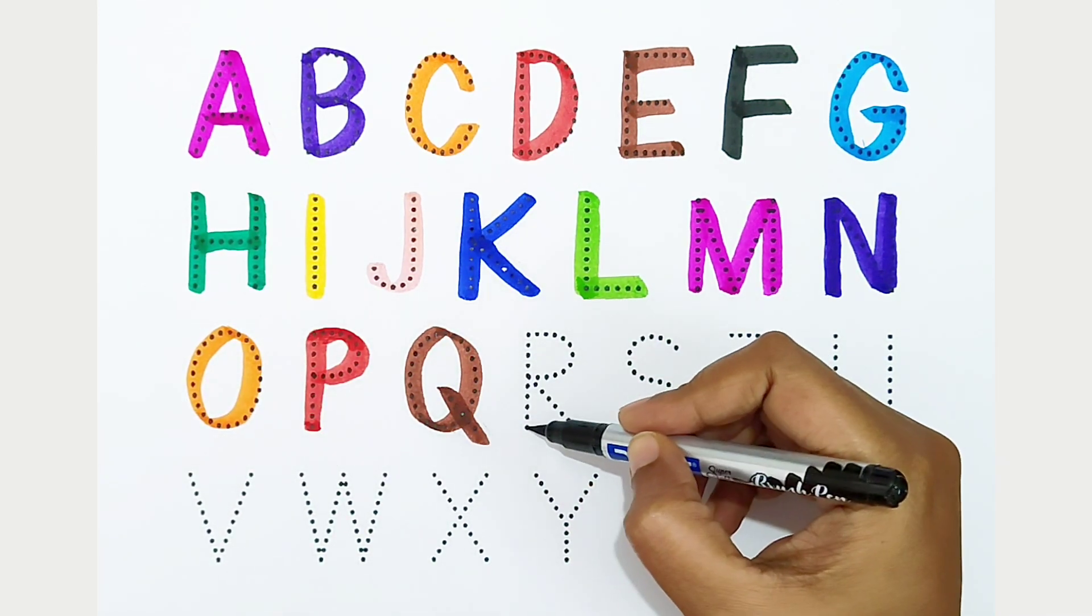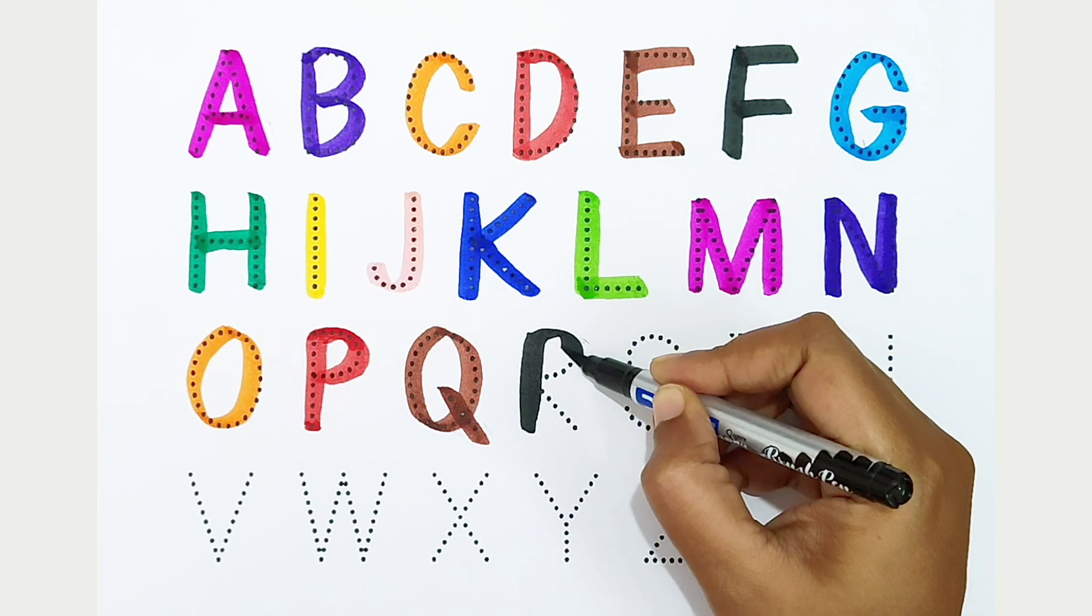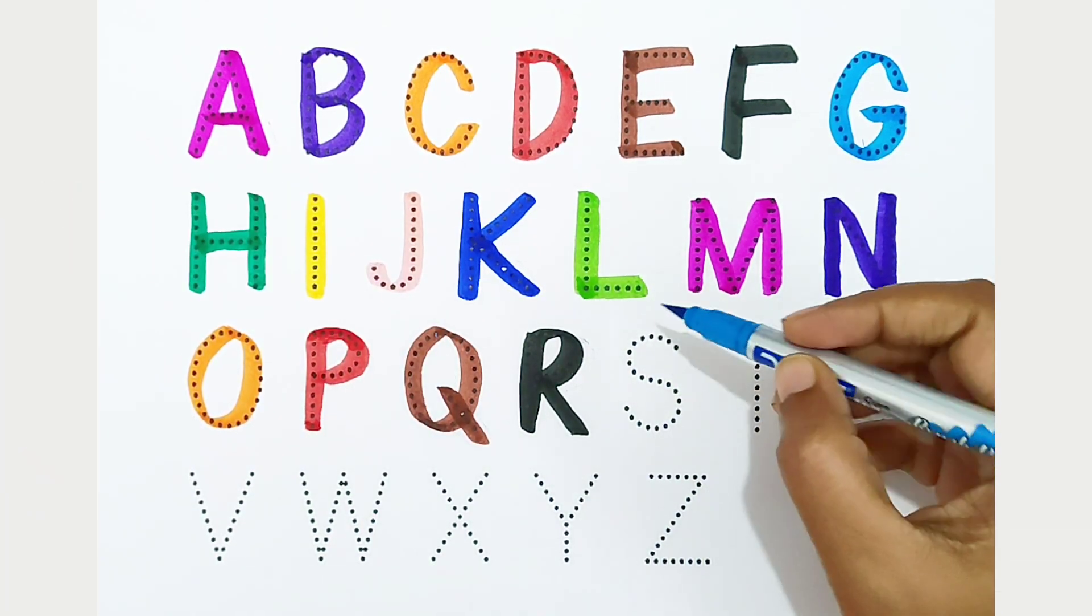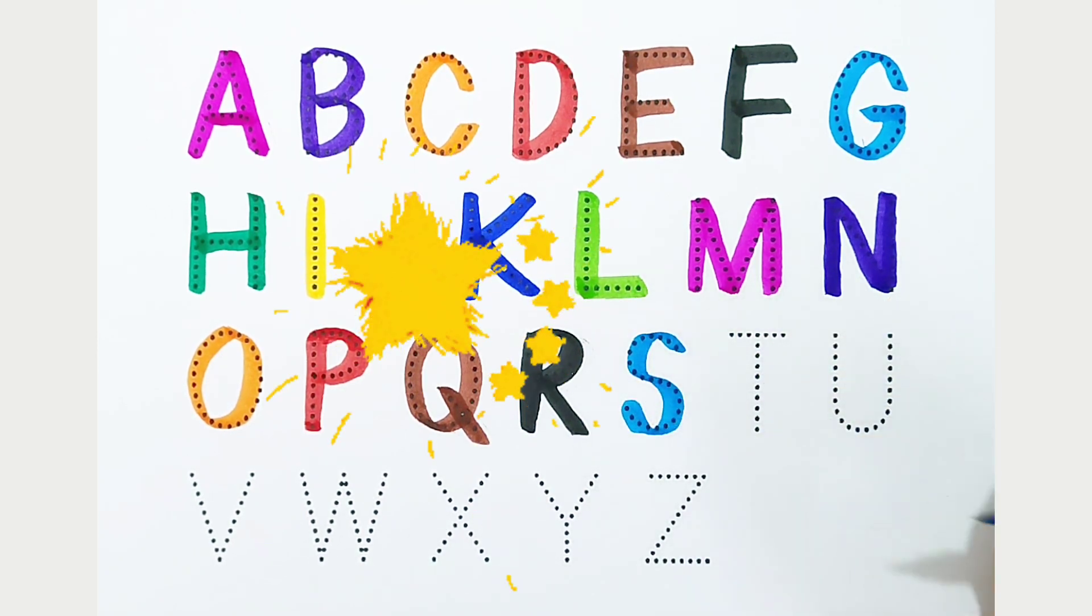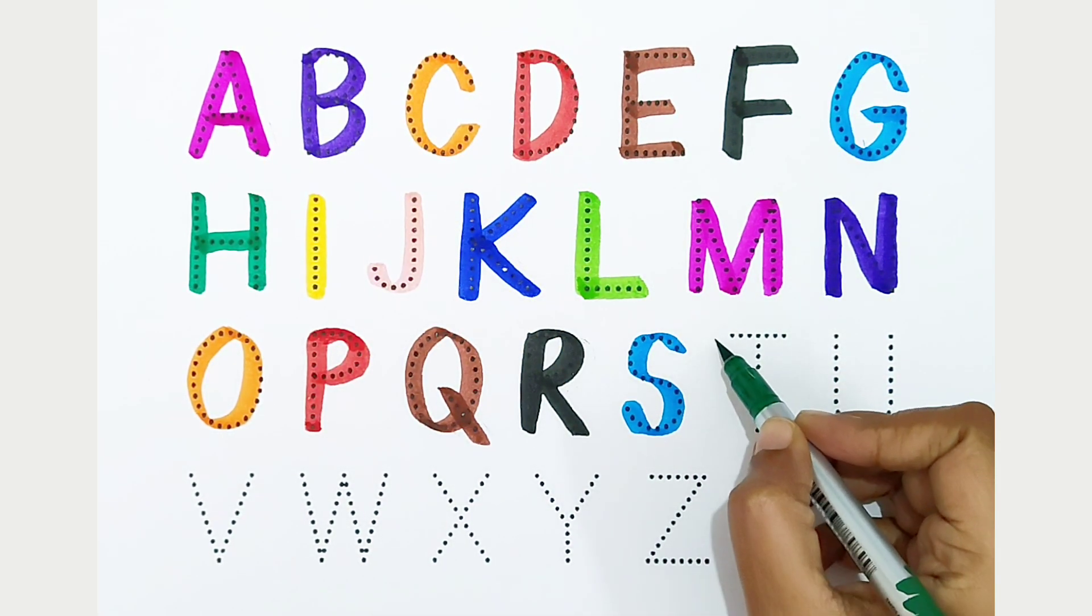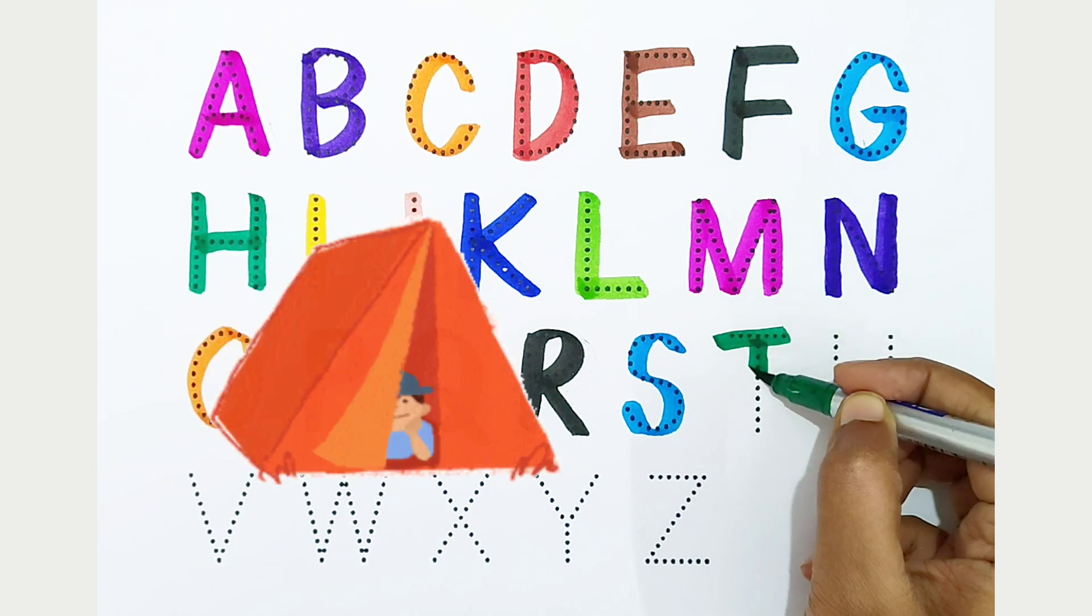R, black color. R is for rainbow. S, light blue color. S is for star. T, dark green color. T is for tent.